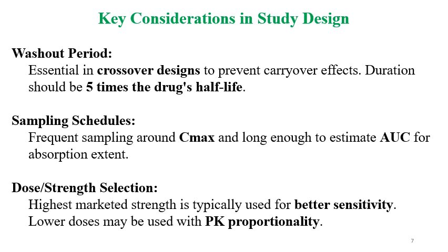For sampling scheduling, frequent sampling around Cmax is required, with sampling long enough to estimate AUC for absorption extent. It is important to sample more frequently near Cmax, considering the Tmax of the formulation or drug. For dose strength selection, the highest marketed strength is generally selected for better sensitivity, but lower doses may also be used with PK proportionality and drug molecule safety taken into consideration.